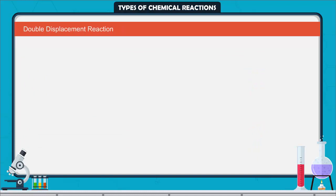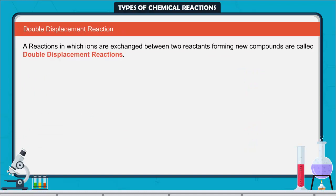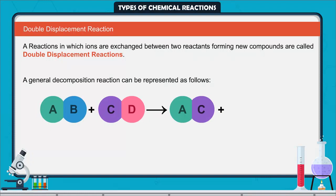Double displacement reaction. Reactions in which ions are exchanged between two reactants forming new compounds are called double displacement reactions. A general decomposition reaction can be represented as follows: AB plus CD forms AC plus BD.